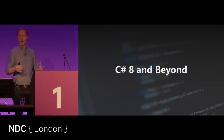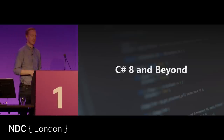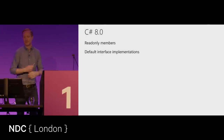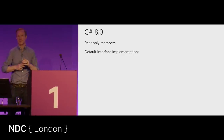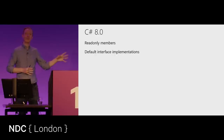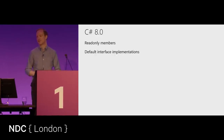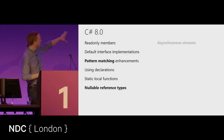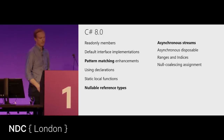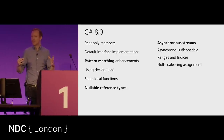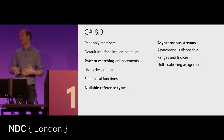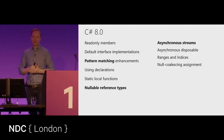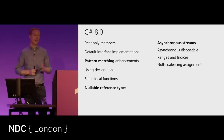In C# 8 there's been a lot of language features introduced. Looking at the list: readonly members, default interface implementations, pattern matching enhancements, nullable reference types, and asynchronous streams. Those last three are what we're going to focus on for a while. Default interface implementations are kind of a divider — either you love them or hate them — but the highlighted ones I really want to discuss are pattern matching enhancements, nullable reference types, and asynchronous streams.